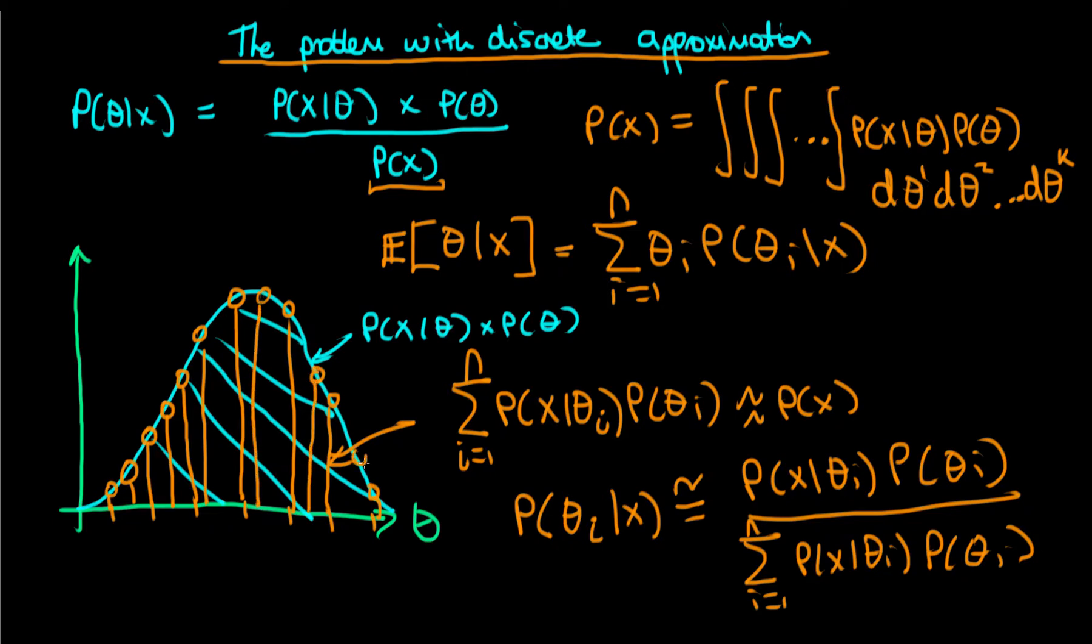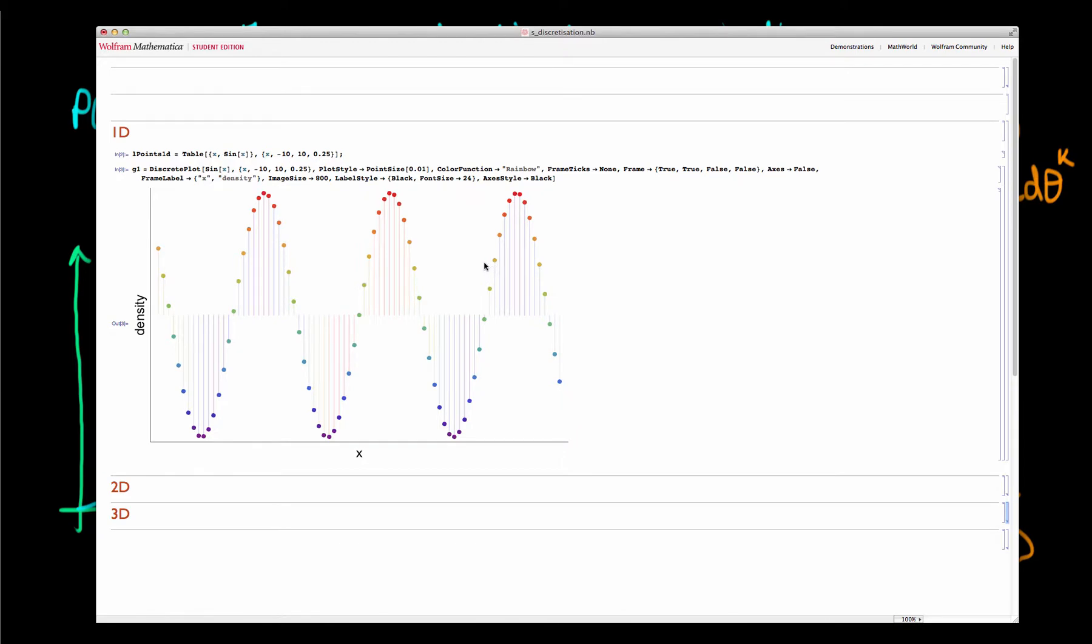And of course the quality of the approximation gets better the more points that we use in our discretization. So if we use twice as many points then we get an approximate posterior which will look that much closer to the continuous case, the exact result. So discretizing seems to work reasonably well in one dimension. How does it fare in more dimensions?